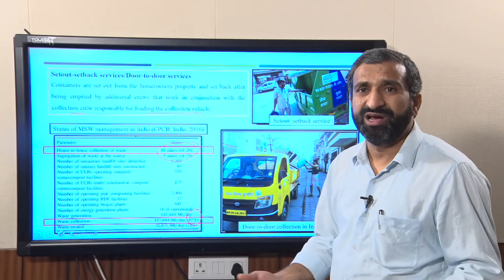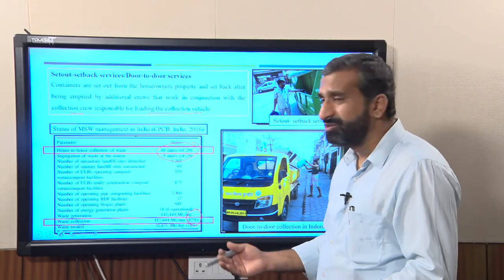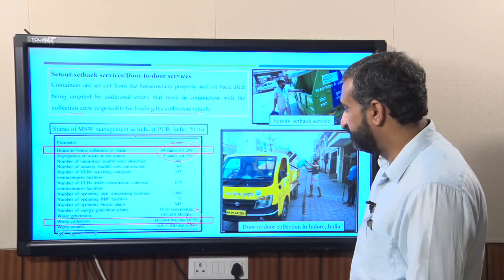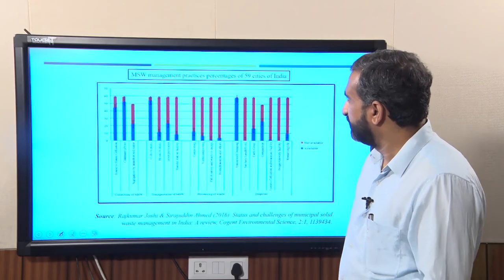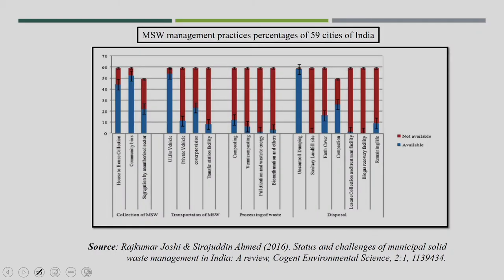If every state has house-to-house collection or set-out set-back service, it is possible to have more than 95% of waste collection. Looking at management practice data for 59 cities in India, more than 45 cities out of 59 have house-to-house collection systems.